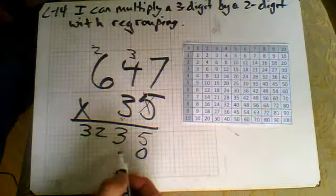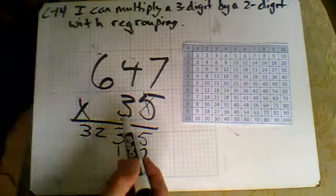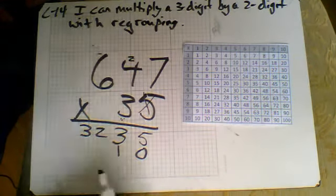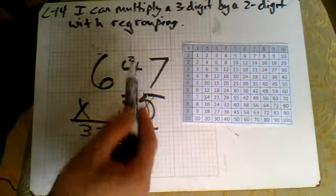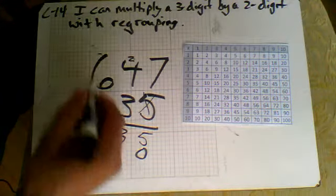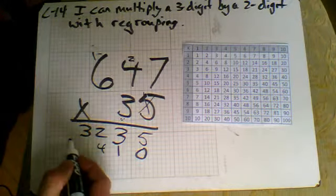So we have 3 times 7 is 21. I'm going to get rid of my previous regroupings. 3 times 7 is 21. Put my 2 up here, my 1 here. 3 times 4 is 12, 13, 14. And then we have 3 times 6 is 18 and 19.